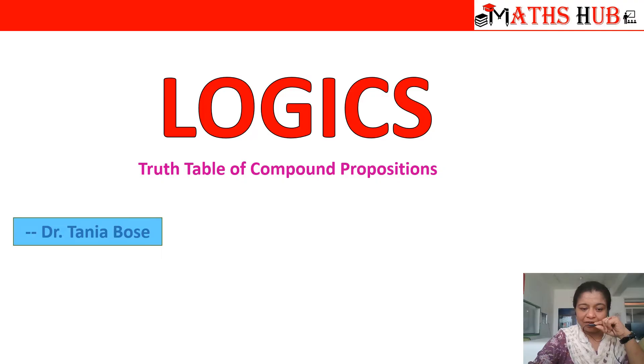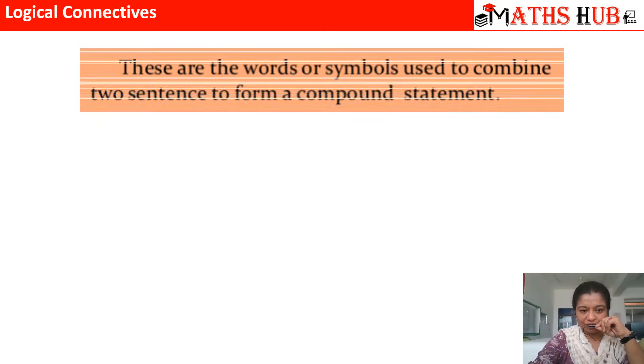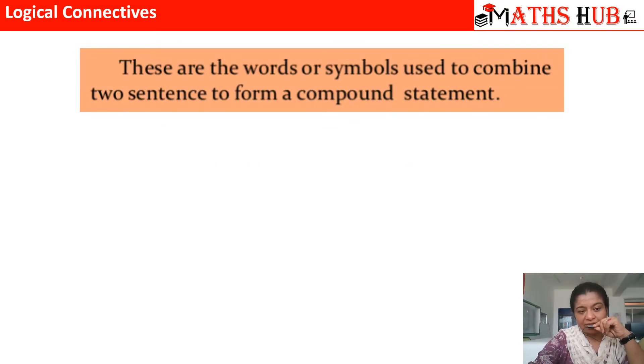Before I begin with the truth table of compound propositions, let us quickly revise what were logical connectives. When two simple statements are combined, we use some words or symbols which are known as logical connectors.